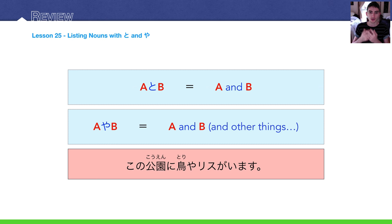So, kono kouen, this park, ni in this park, tori is bird, ya means and in this case, risu is squirrel, ga imasu, there are. I would translate this as in this park, there are birds and squirrels and many other animals, I don't know, something like that. Because the implication is, there's more than just birds and squirrels.